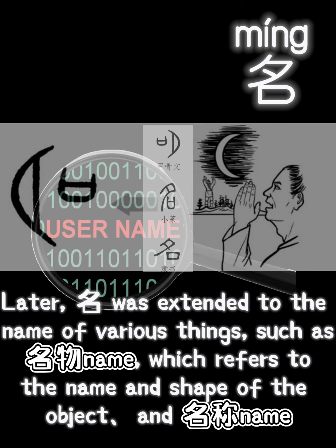Later, 名 was extended to the name of various things, such as 名物 (which refers to the name and shape of an object) and 名称 (name).